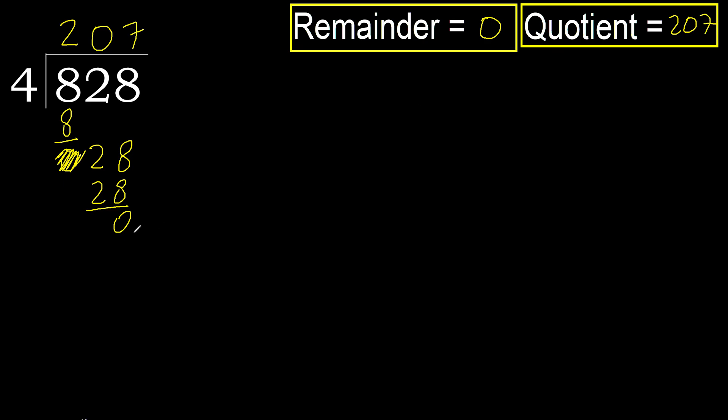The result is 0. Therefore 828 divided by 4 equals the answer shown here.